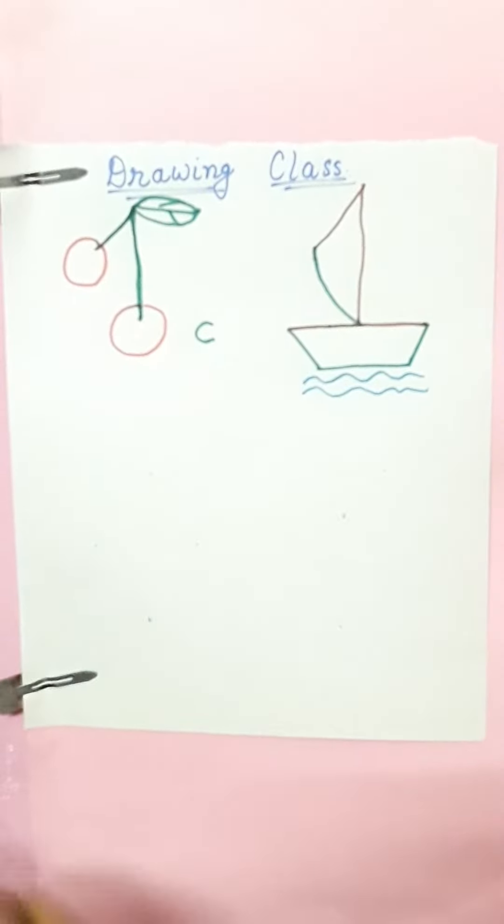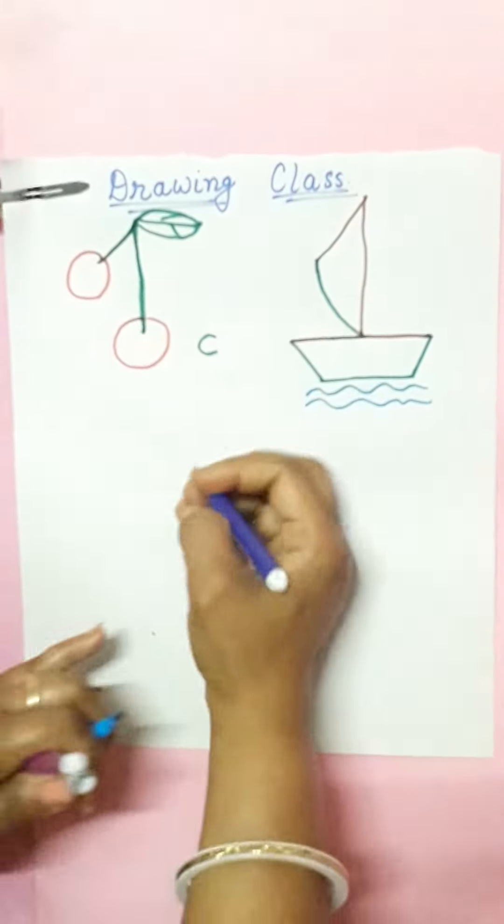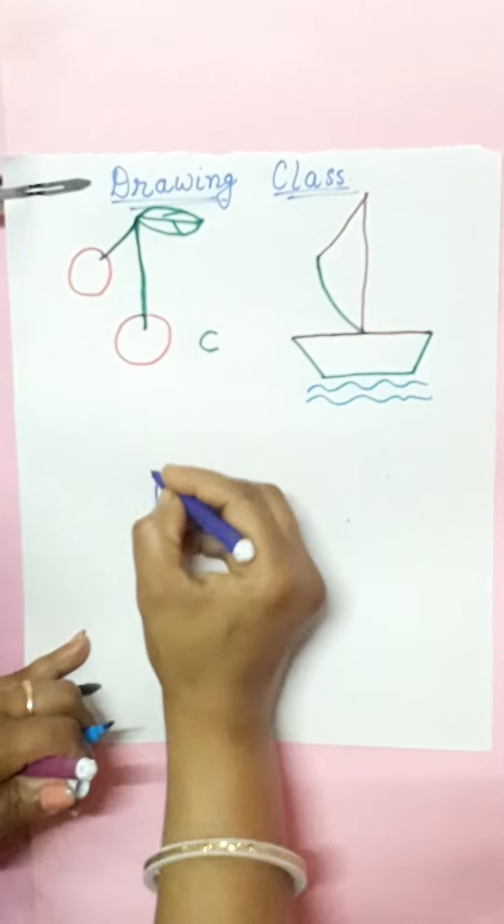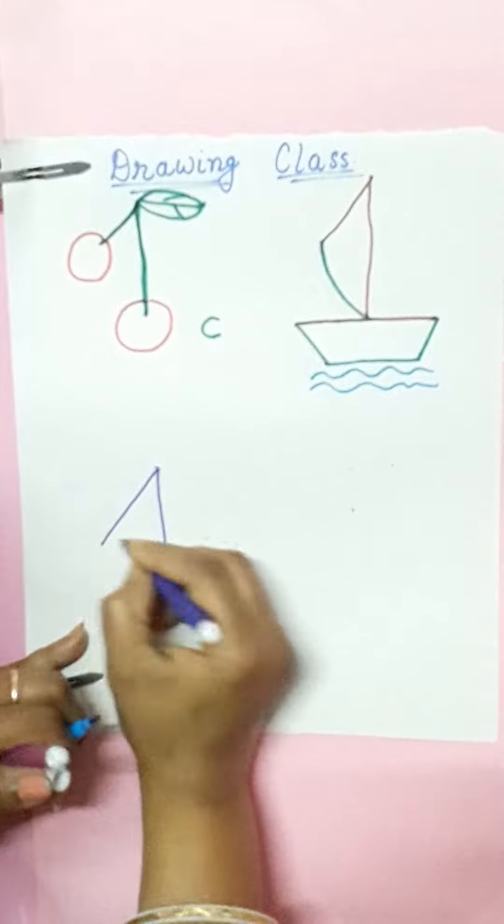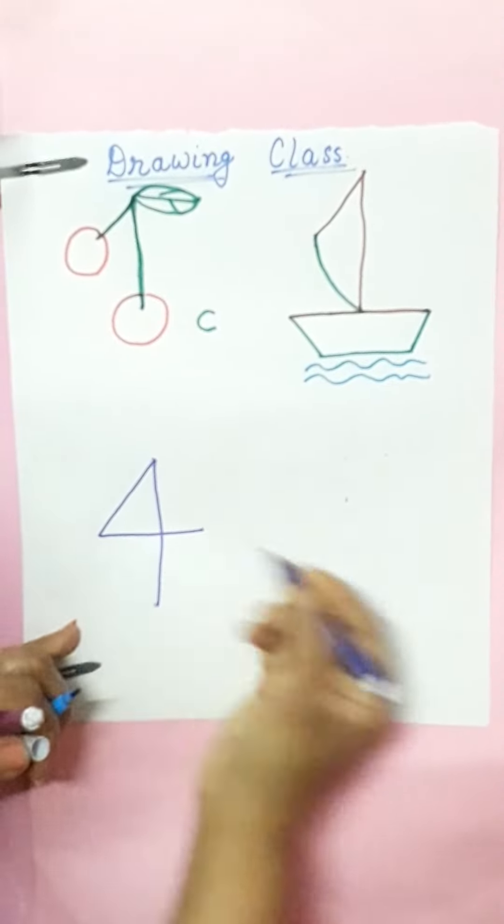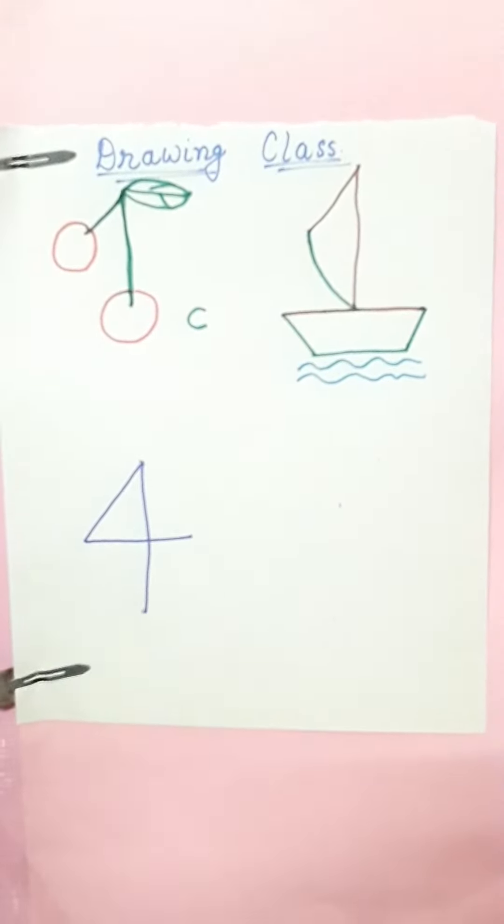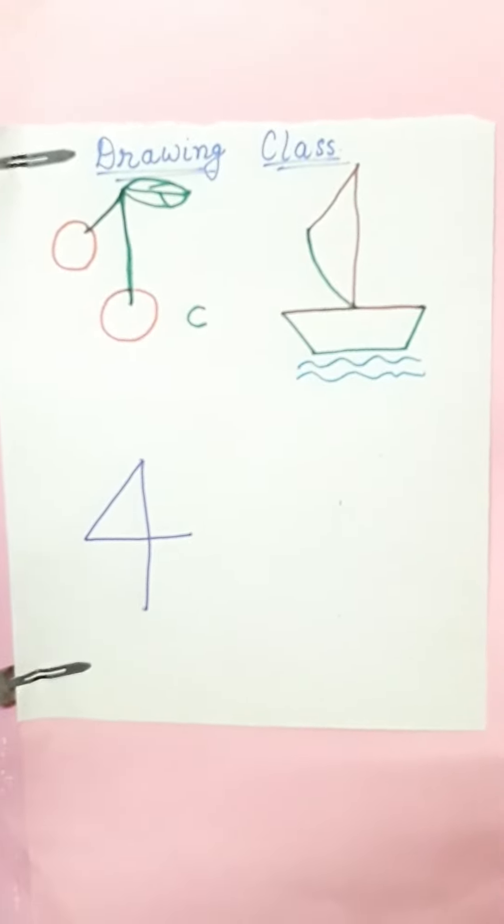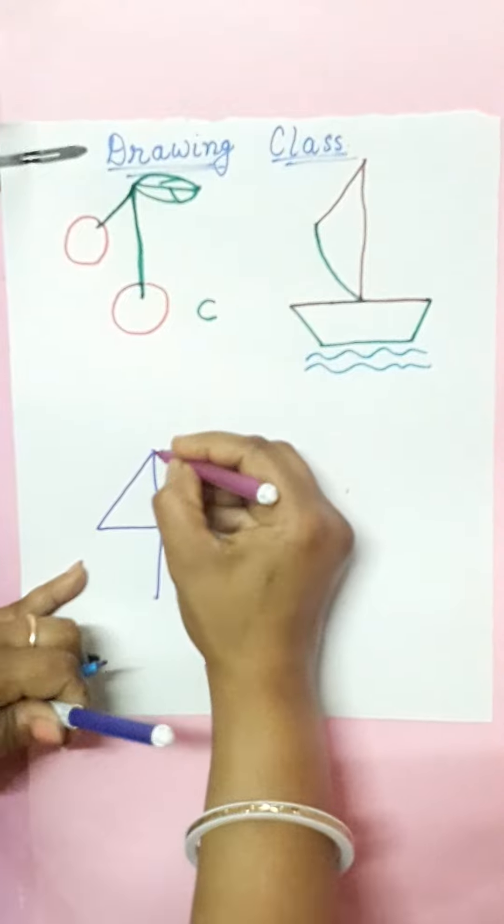Now next number is number four. Standing line, slanting line and a sleeping line. This becomes number four. Now what we will make? Now see, we will make a slanting line.